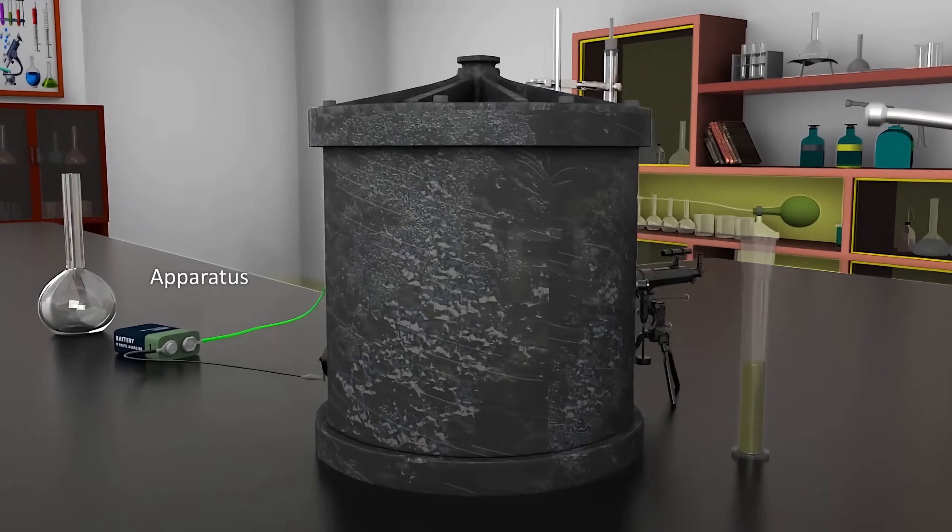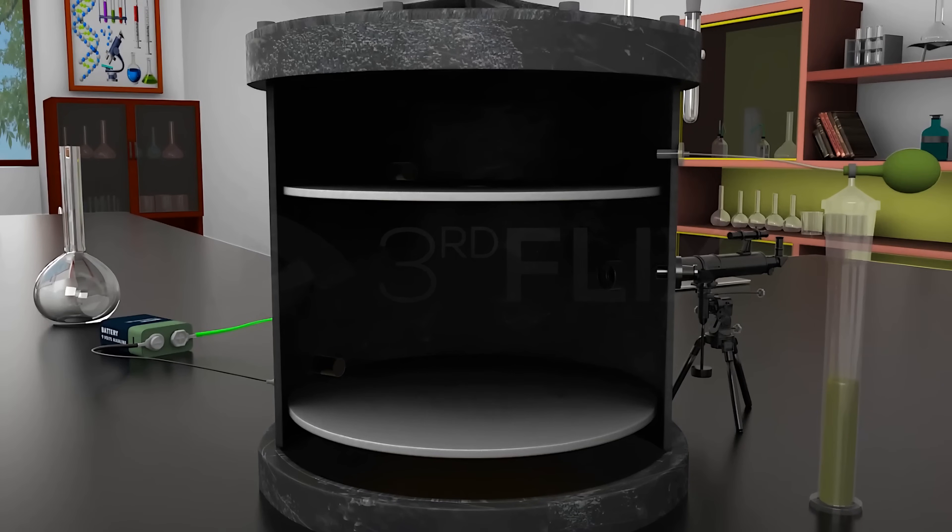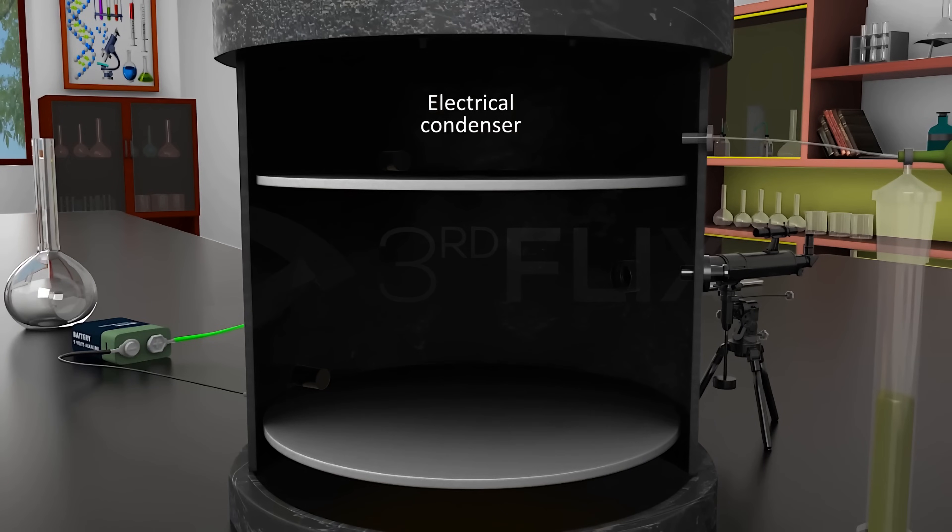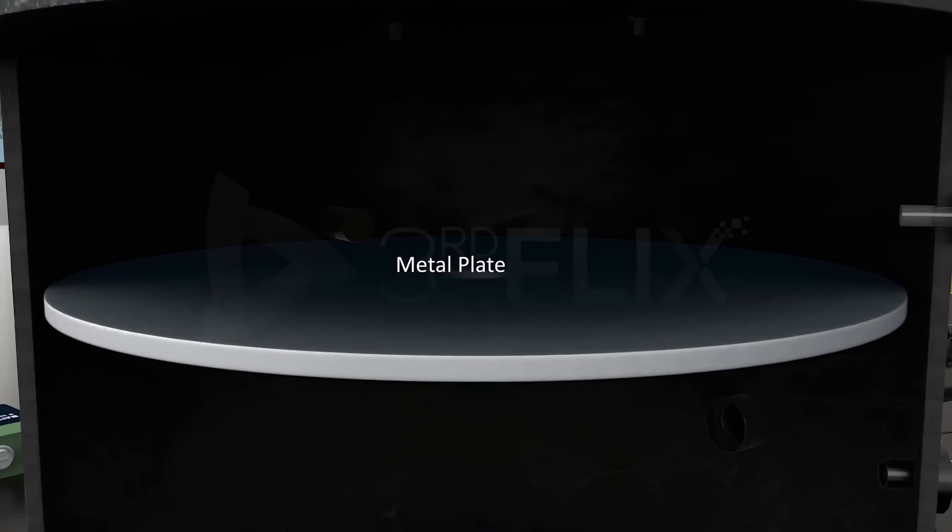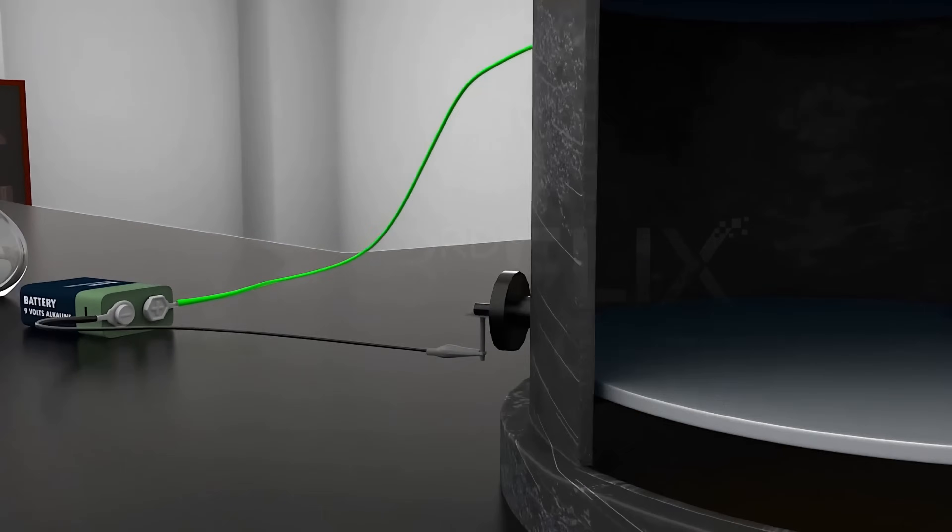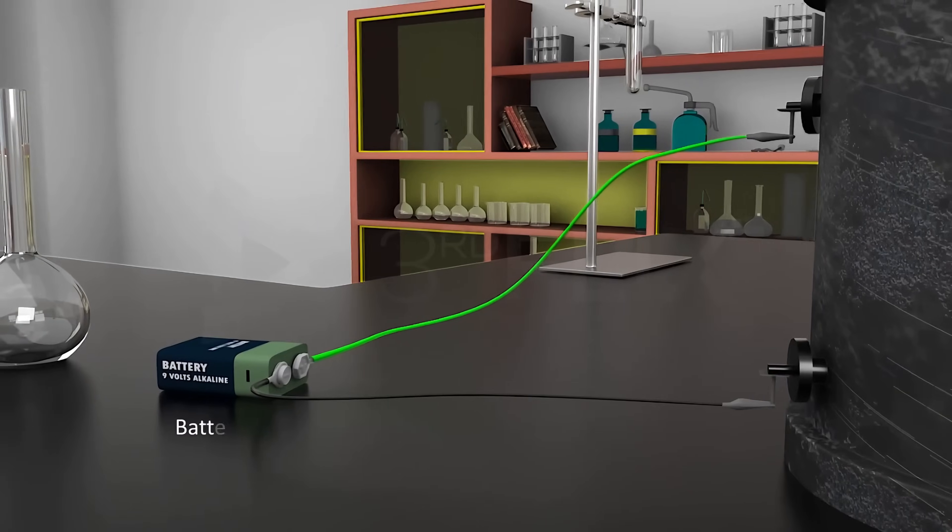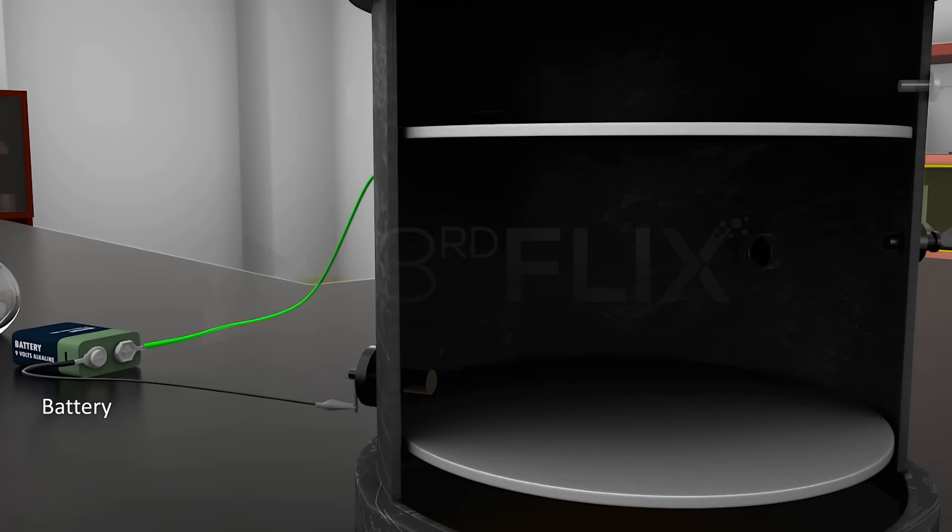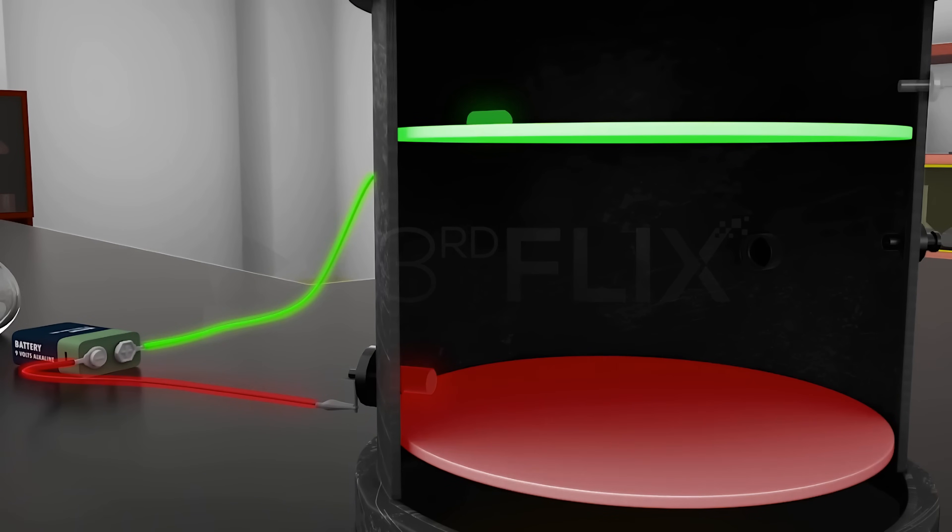Here is the apparatus used for the purpose. It contains a transparent electrical condenser with two metal plates, one at the top and the other at the bottom of the condenser. The plates are connected to a battery such that the charge on the upper plate is positive and that on the lower plate is negative.